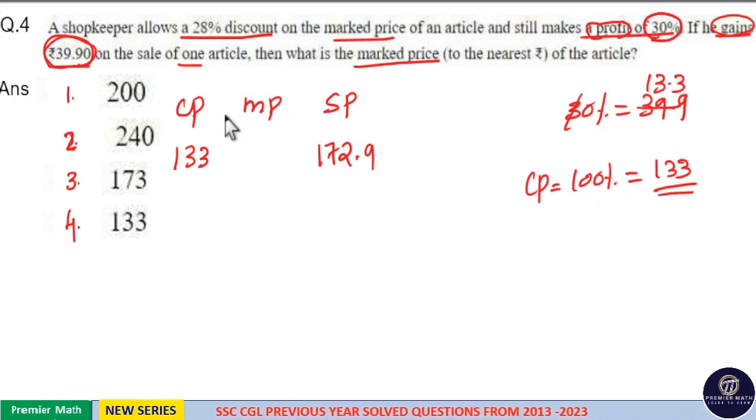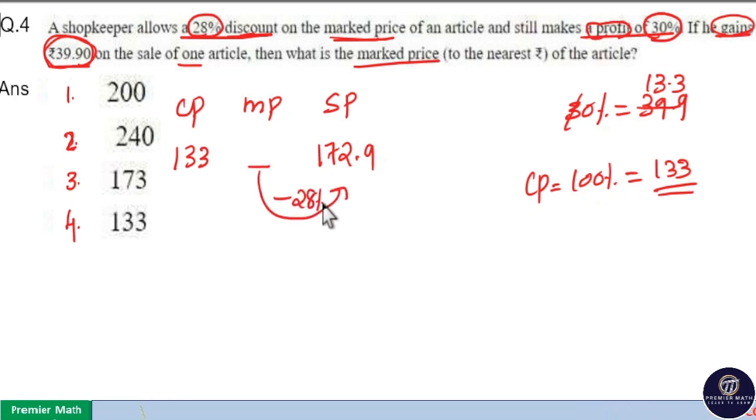Now we don't know what the marked price is, but the question says shopkeeper allows 28% discount and this discount is on the marked price. So shopkeeper allows 28% discount.